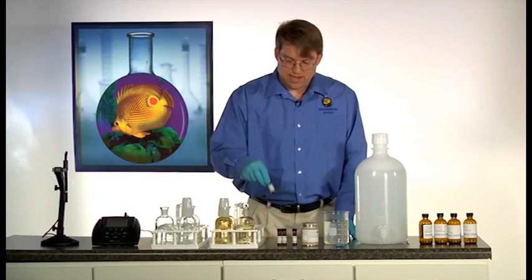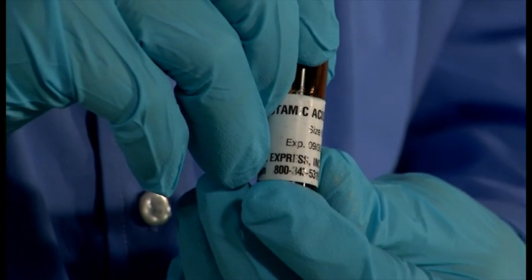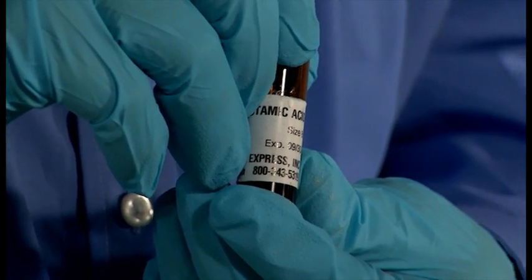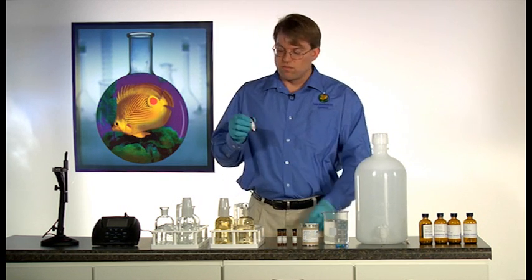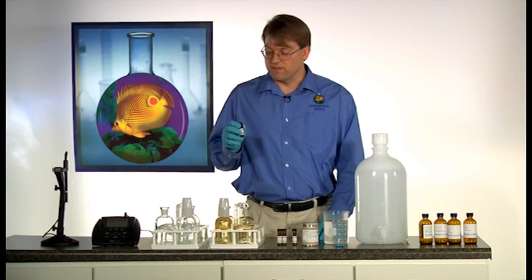The glucose and glutamic acid check standard is the primary measure for precision and accuracy of a BOD batch. For ease of use, prepared vials with the appropriate amount of glucose and glutamic acid are recommended.